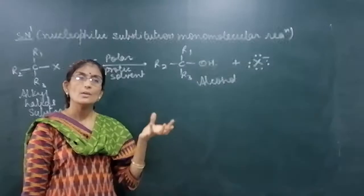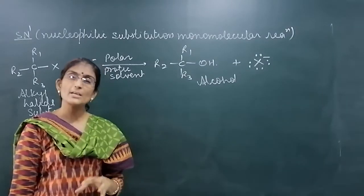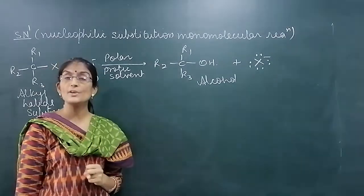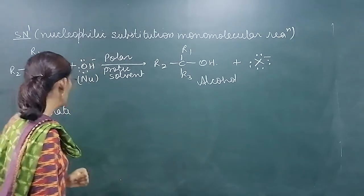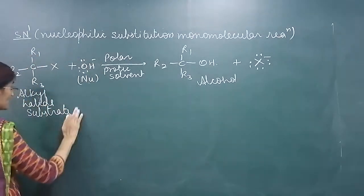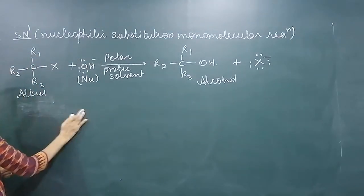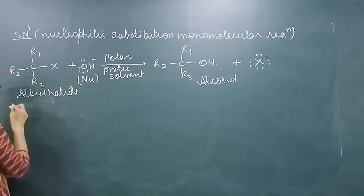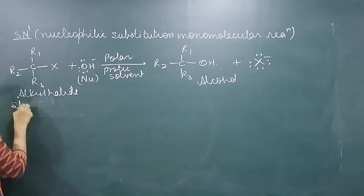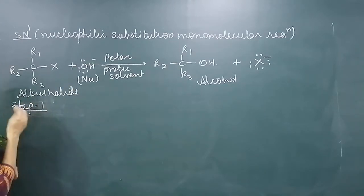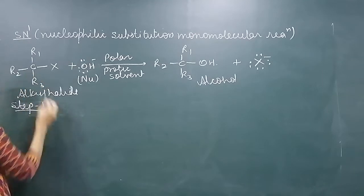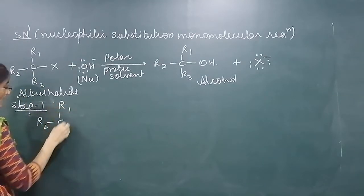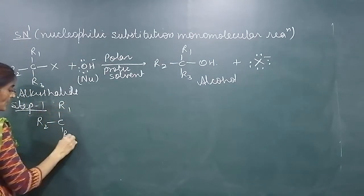Now how does this reaction proceed? What is the mechanism of this reaction? What is the order of this reaction? What does the rate depend on? Everything we will discuss now. This reaction finishes in two steps. In the first step, suppose I write here the halide — in step one, what will happen: this alkyl halide in polar protic solvent...